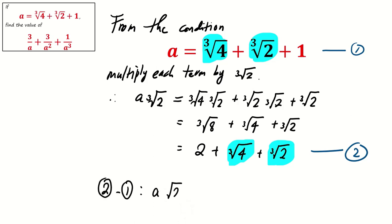From the left-hand side, we obtain a times cube root of 2 minus a, and on the right-hand side, we obtain 2 minus 1, with the common terms canceling off. This means that a times (cube root of 2 minus 1) equals 1.